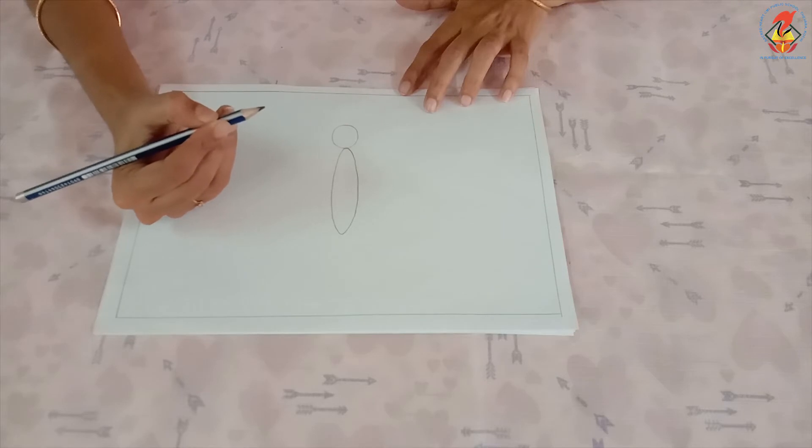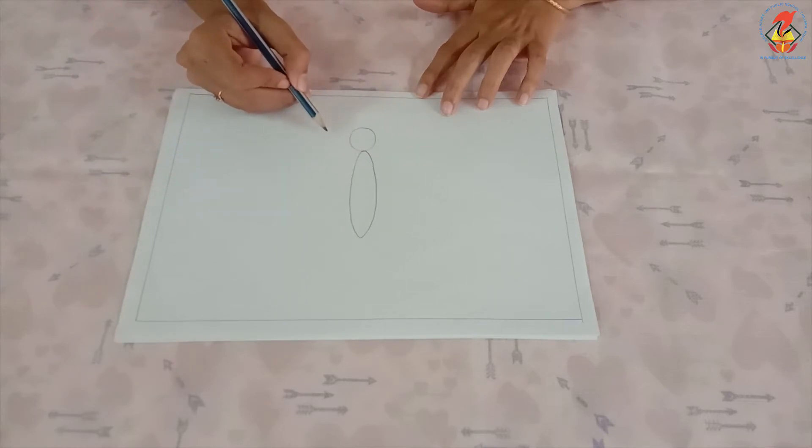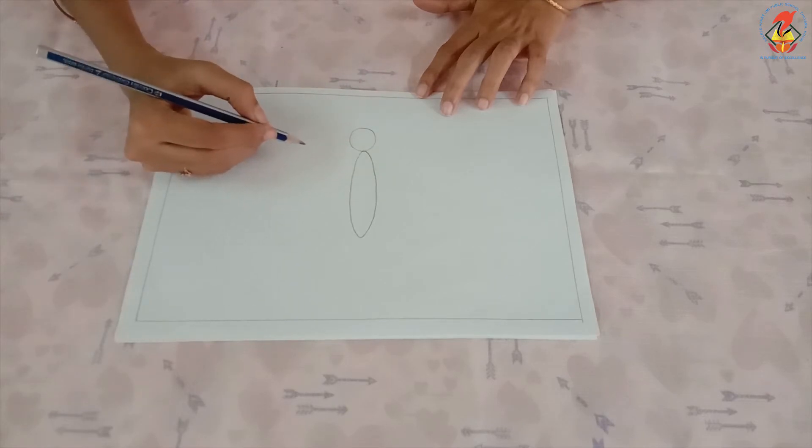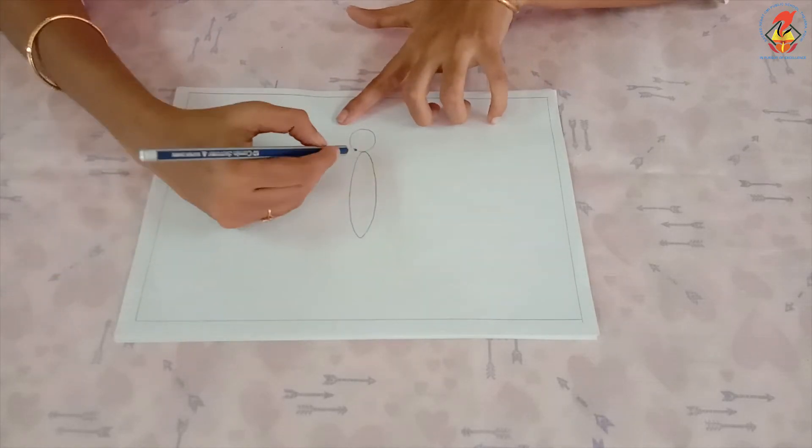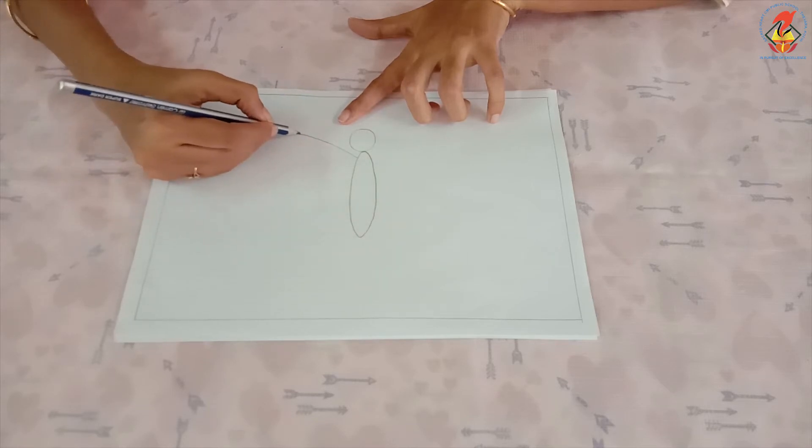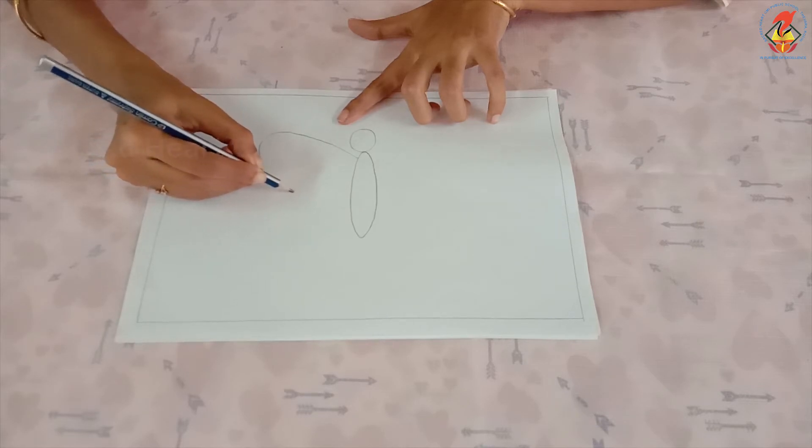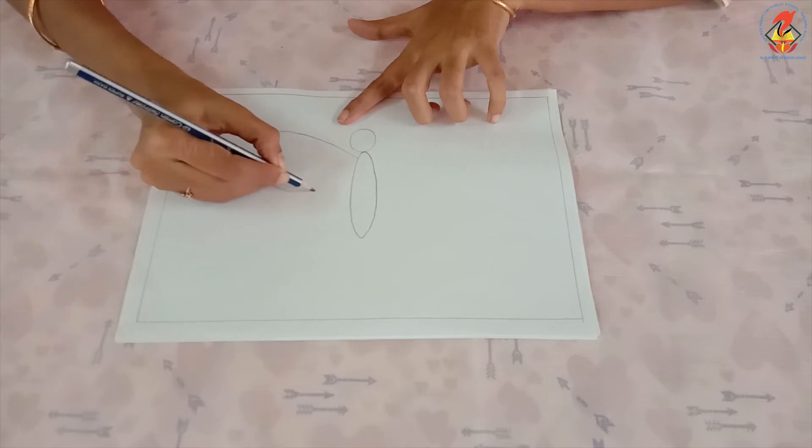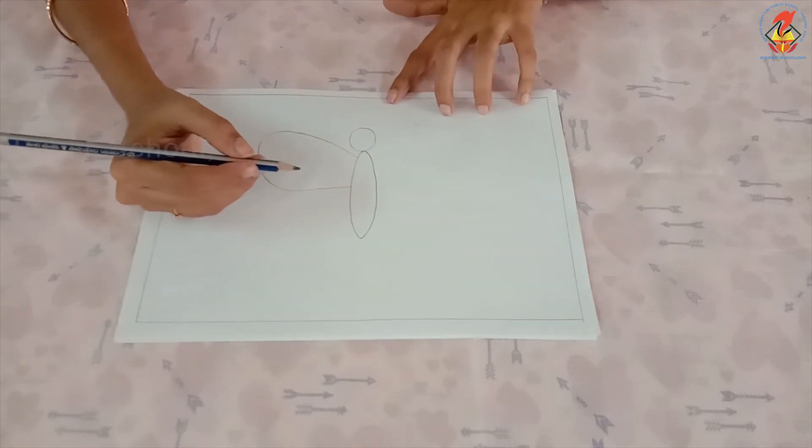Look, you got the butterfly's body. Next we are going to draw the wings. To draw large upper wings, start with one side first and then the other. Draw a curved shape starting right below the head, connecting to the middle of the body. Repeat the same on the other side.